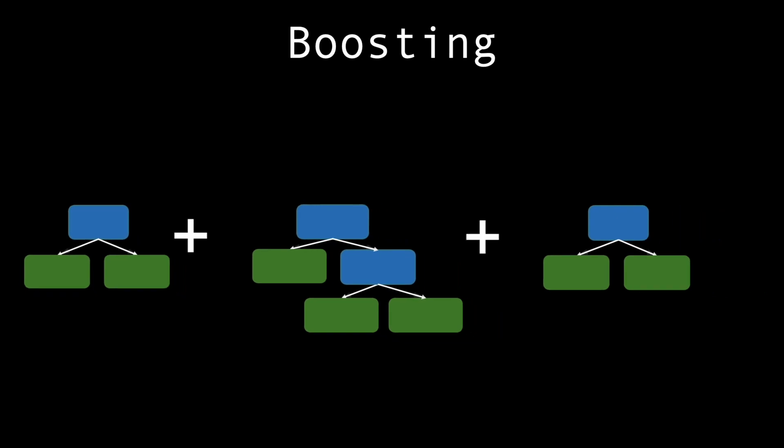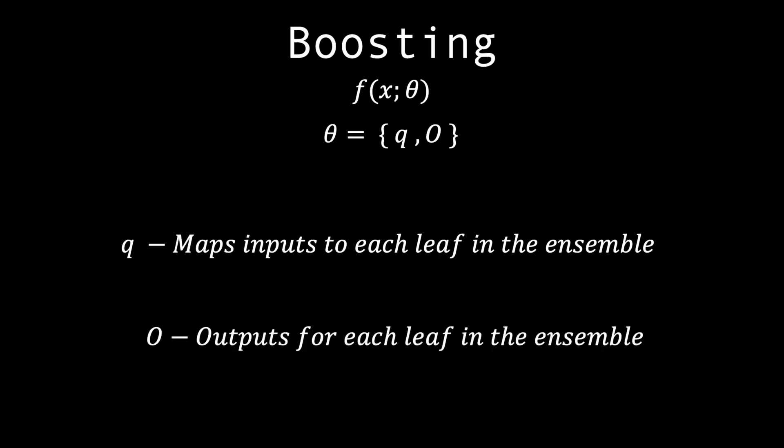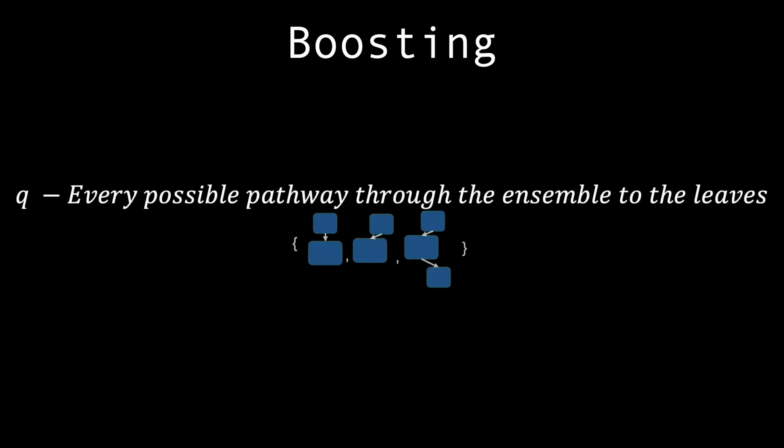But, how are these trees made? Let's consider an ensemble's output as f, where theta is the parameters of the tree. Namely, q that maps data examples to the index of a leaf, and o is the output associated with each leaf. Basically, q is the collection of all possible tree decisions, and o is the collection of those decisions' outputs.